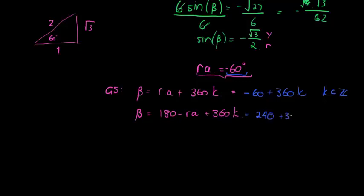And 240, as you would know, is in the third quadrant, where we know that sine would be negative. And that's my two general solutions.